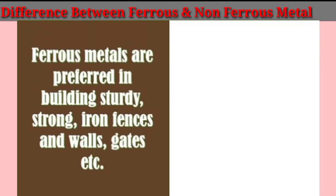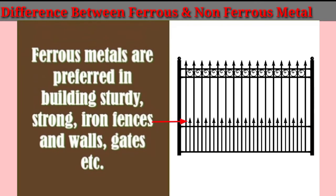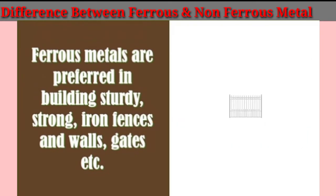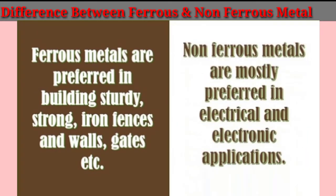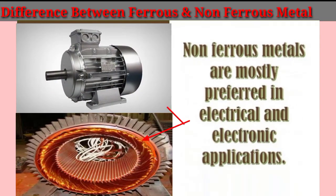Ferrous metals are mostly preferred in building sturdy, strong iron fences and wall gates. Non-ferrous metals are mostly preferred in electrical and electronics applications.